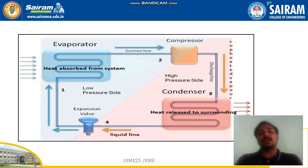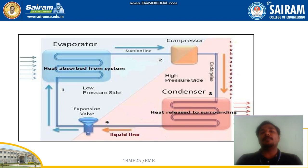Whenever heat is extracted in the evaporator from the cabinet — which is the refrigerator itself — the evaporator is visible on the back side of the refrigerator, and you can also see the condenser on the back side. Based on this process, we are able to reduce the temperature inside the refrigerator to keep food items, vegetables, and fruits fresh. To preserve those items, we use this refrigerator. I hope you have understood the concept of the refrigerator.